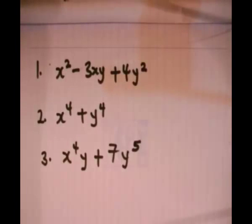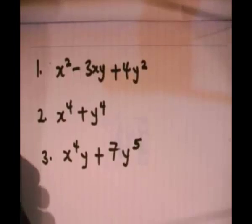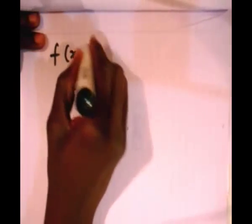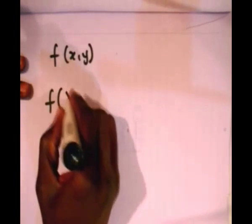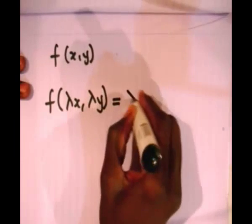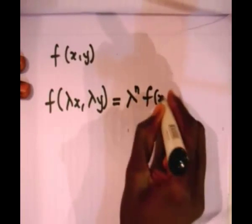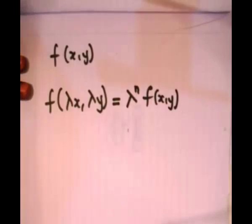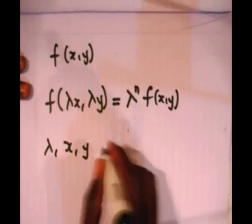Now let's generalize this. A function of two variables f(x,y) is said to be homogeneous of degree n if f(λx, λy) can be expressed as λⁿ f(x,y), where λ, x and y are all defined on both sides.